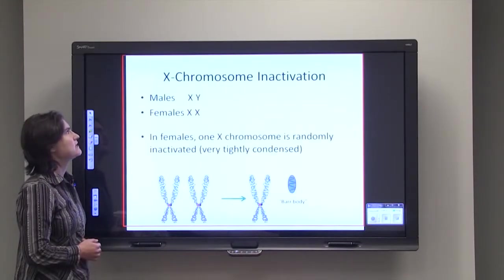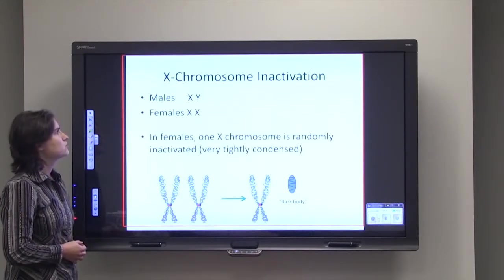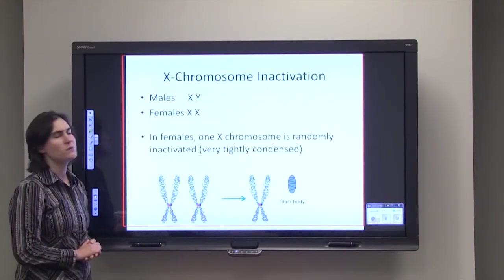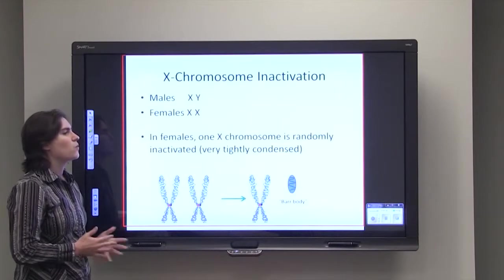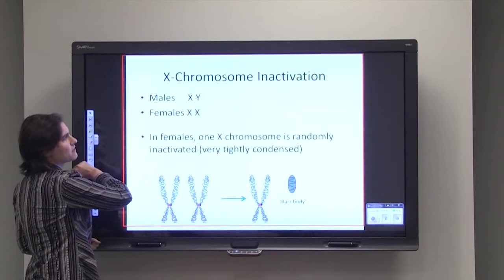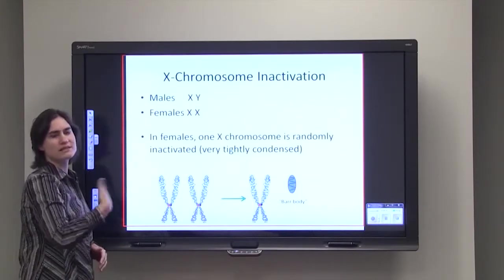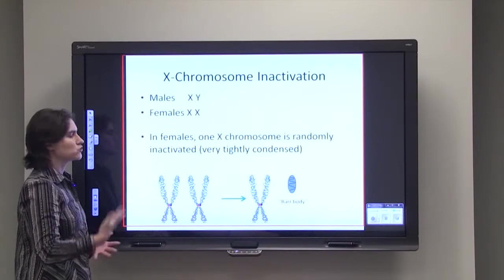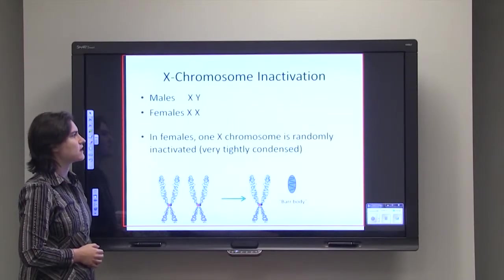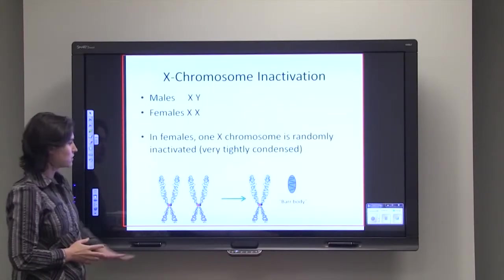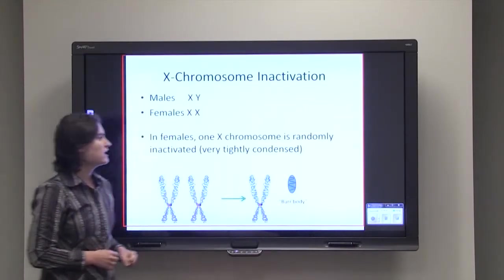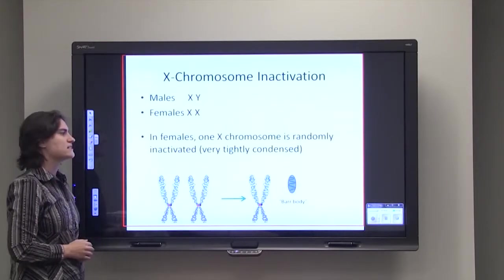And one example of that last case is X chromosome inactivation. So gentlemen, your sex chromosomes are an X and a Y. Ladies, your chromosomes are two X's. Now the body needs a way to only have a certain amount of gene expression. So males have one copy of X chromosomes, but females don't want twice as much gene products. So they need a way to control that gene regulation. And so in females, one of those X chromosomes is randomly inactivated or very, very tightly condensed. So you can see down here we've got two chromosomes, and one of them is very, very condensed, tightly bound, and it forms what's called a Barr body. And so that DNA is shut off.